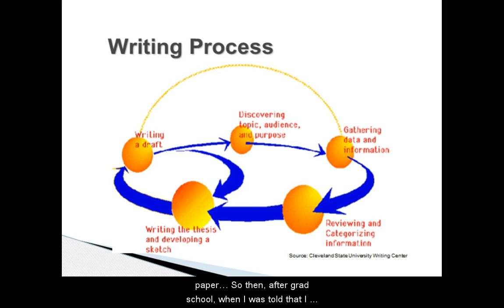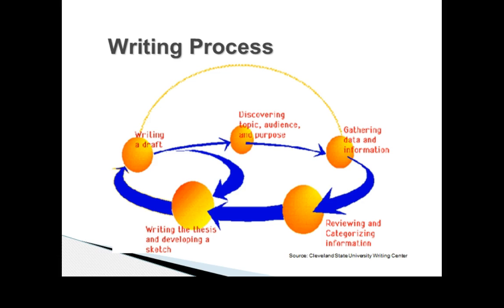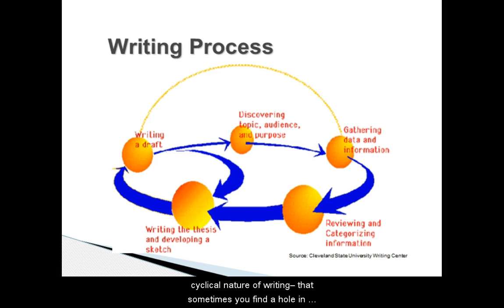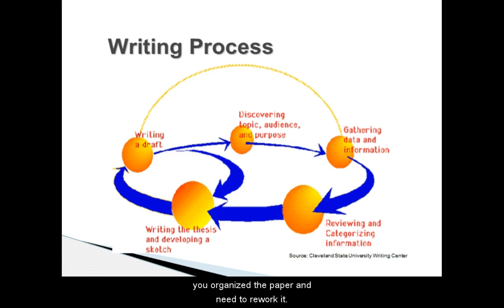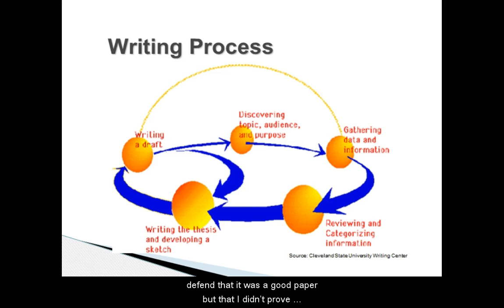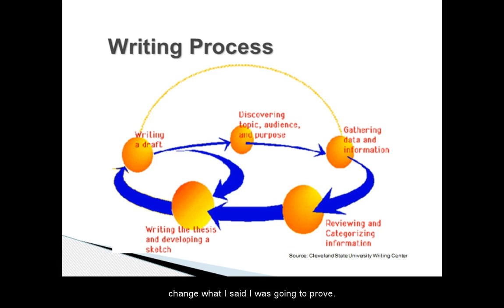After grad school, when I was told that I would have to present to graduate students about writing, I said no way. But then I found a graphic that completely explained the cyclical nature of writing — that sometimes you find a hole in your paper and have to go back and pull more research, or find that you don't like how you organized the paper. In my case, I was told three days before my defense that it was a good paper, but I didn't prove what I said I would. So I could either rewrite the paper or change what I said I was going to prove. I went with option B, and it was smooth sailing from there.